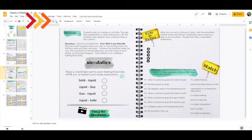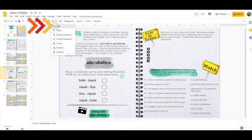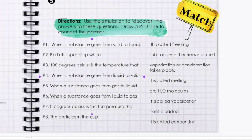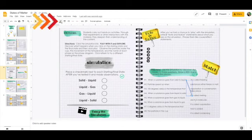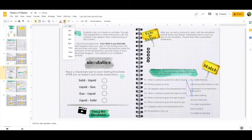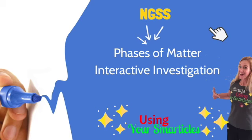To draw that line, click on the line tool and then draw the line from the start to the finish. You can then adjust the line to make it the color you want and the thickness. So good luck as you learn more about the phases of matter through this interactive investigation.